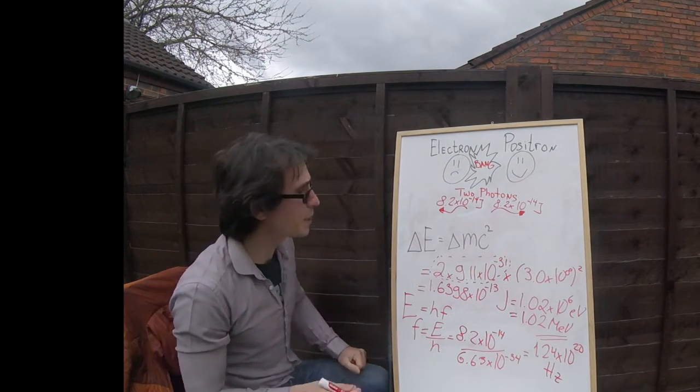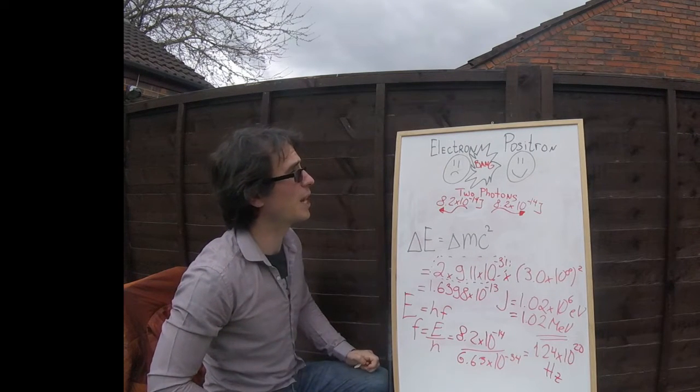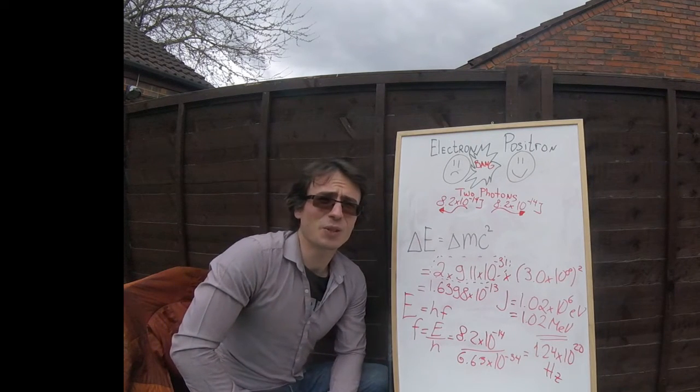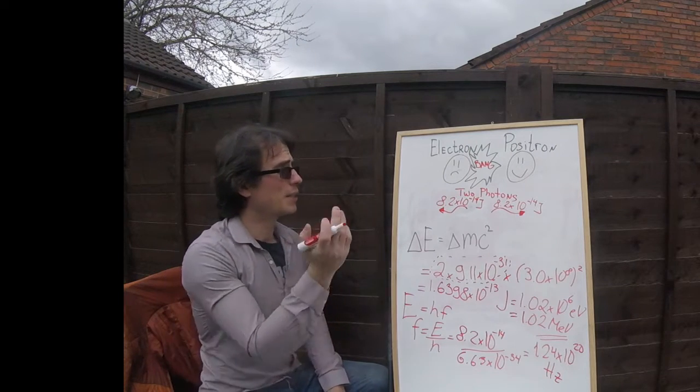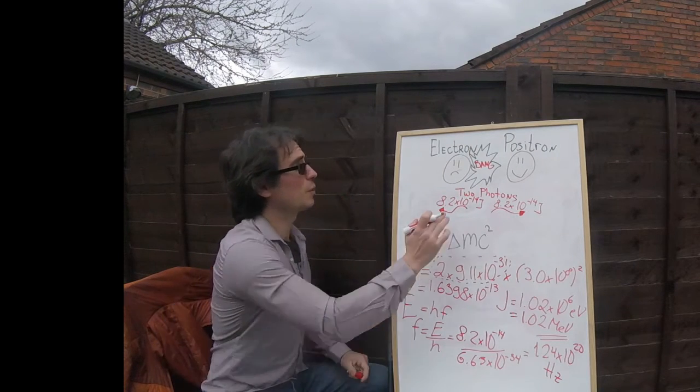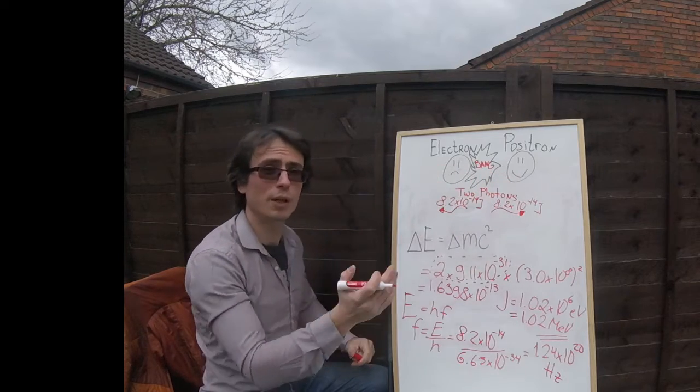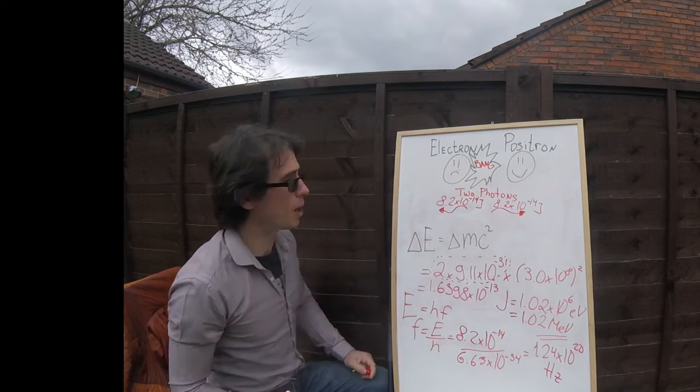So this is the frequency of those photons that are going to emerge out of this interaction. Okay guys, let's just quickly recap. In this episode, we talked about annihilation. We had an electron meeting a positron, a particle meeting its anti-particle.